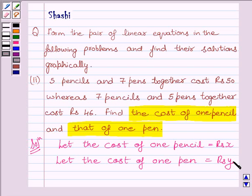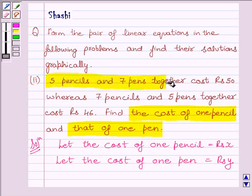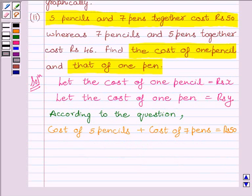Now, 2 conditions are given in the question. First condition is, 5 pencils and 7 pens together cost Rs. 50. Cost of 5 pencils would be 5X and the cost of 7 pens would be 7Y. This implies 5X plus 7Y must be equal to Rs. 50. Therefore, our first equation is 5X plus 7Y is equal to Rs. 50.